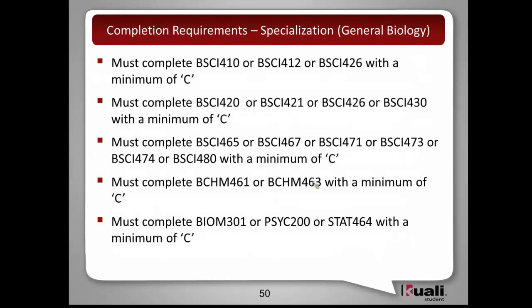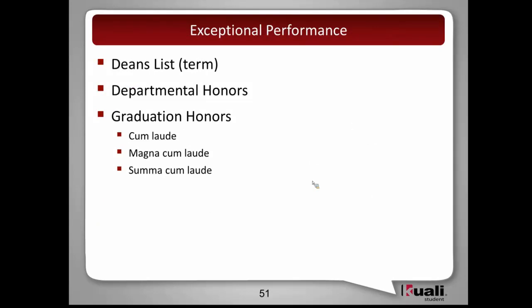Within the biology major, we picked a specialization — general biology — which has similar completion requirements. As a student progresses through the program, the system has the ability to flag certain students for exceptional performance. We have identified dean's list for exceptional performance within a term, departmental honors for exceptional performance within a specific department, and graduation honors for exceptional performance throughout the student's time in the program, with different levels of exceptional performance supported.